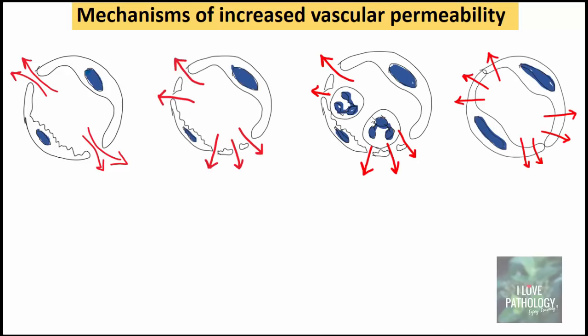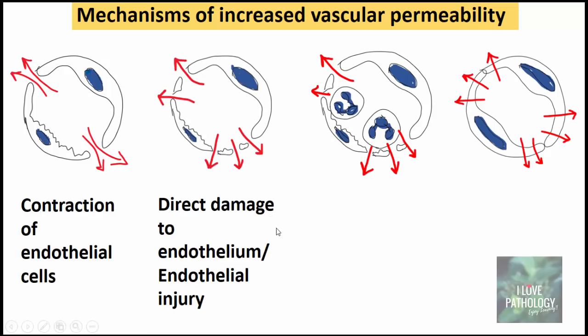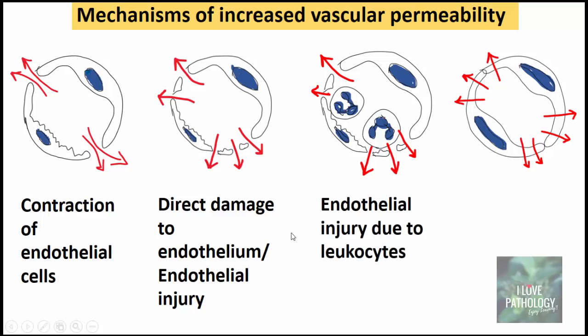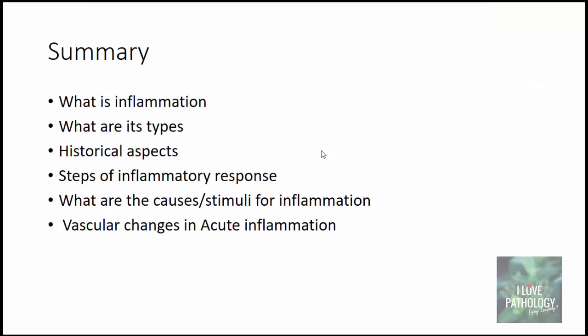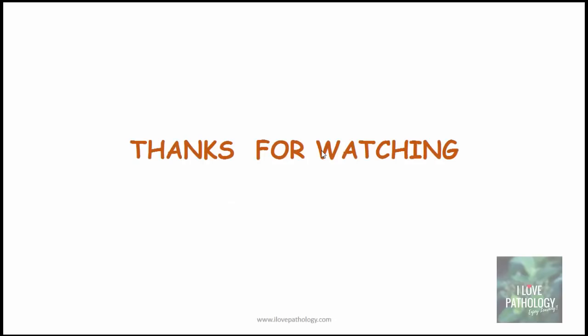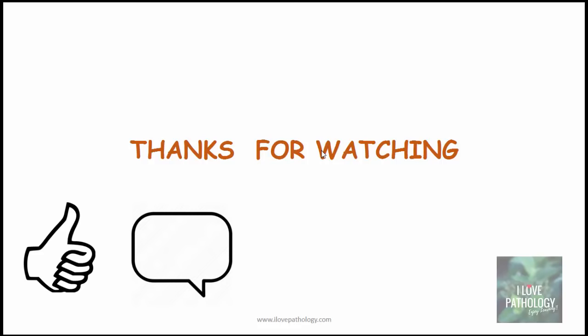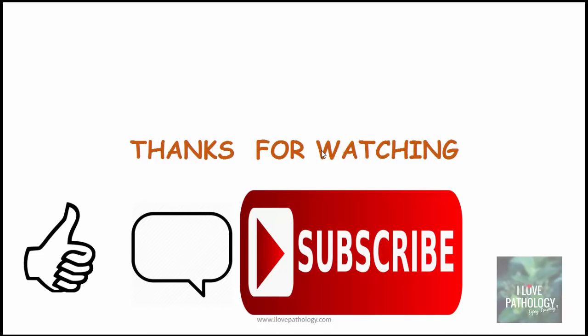The four mechanisms of increased vascular permeability are: contraction of endothelial cells, direct damage to the endothelium, endothelial injury by leukocytes, and transcytosis. This completes the vascular changes in acute inflammation. In summary, we defined inflammation, discussed its types, covered historical aspects, the five R's of inflammatory response, causes of inflammation, and vascular changes. The next tutorial will cover the cellular events in acute inflammation. Thank you for watching — please like, comment, subscribe, and share.